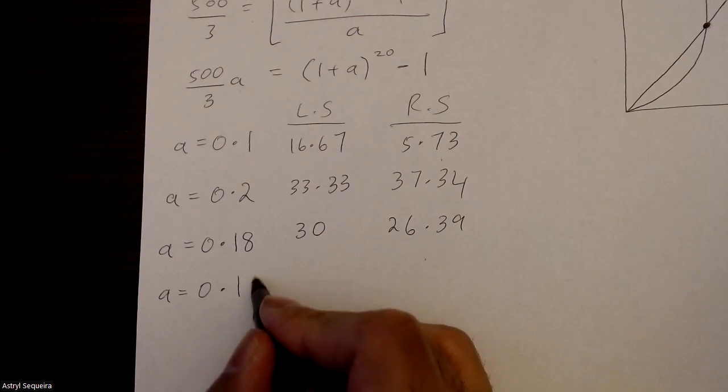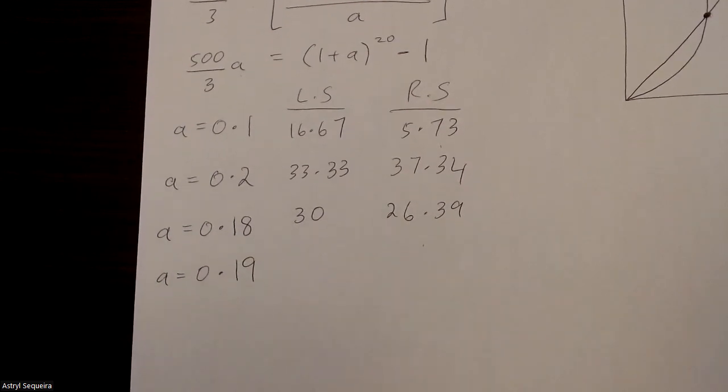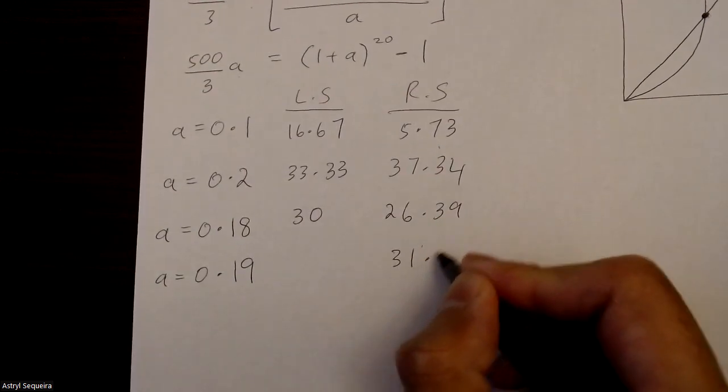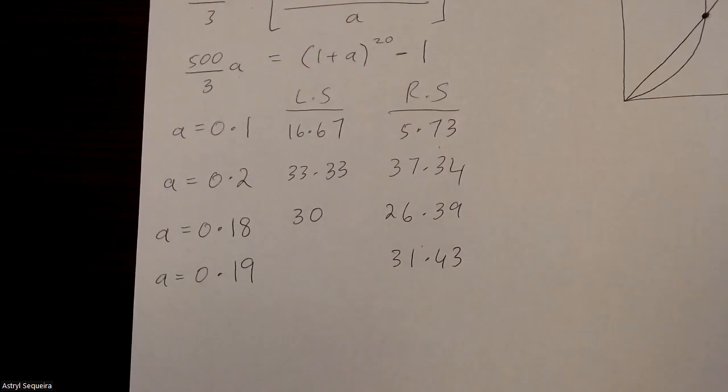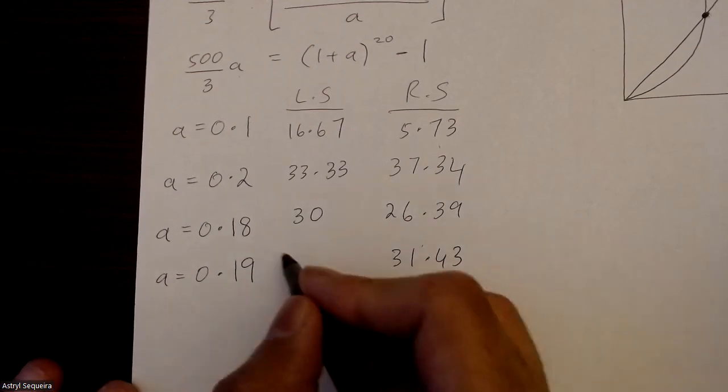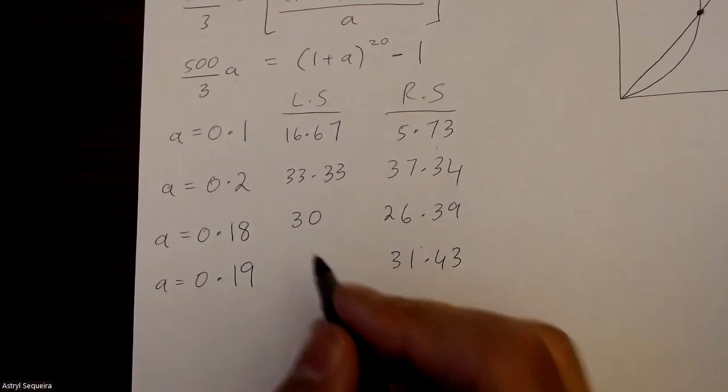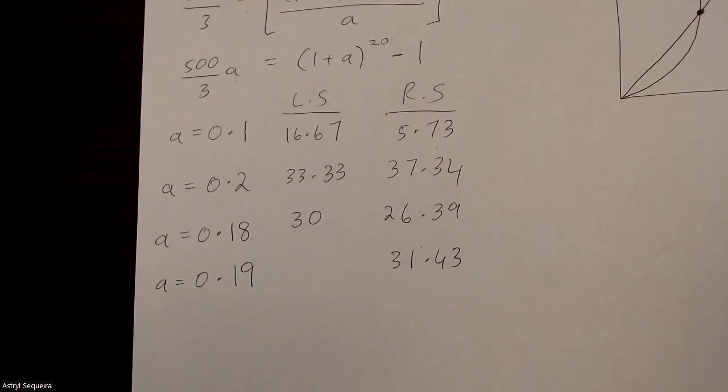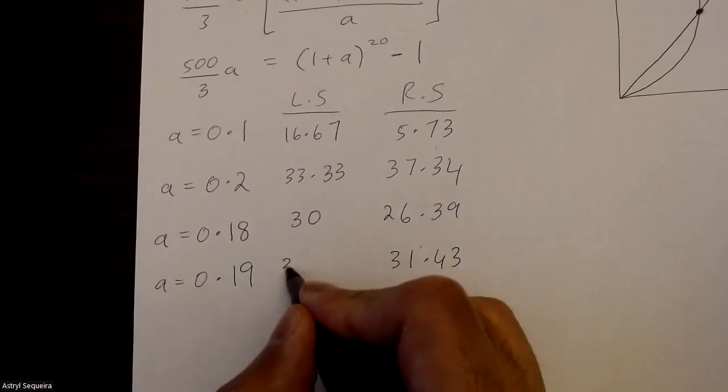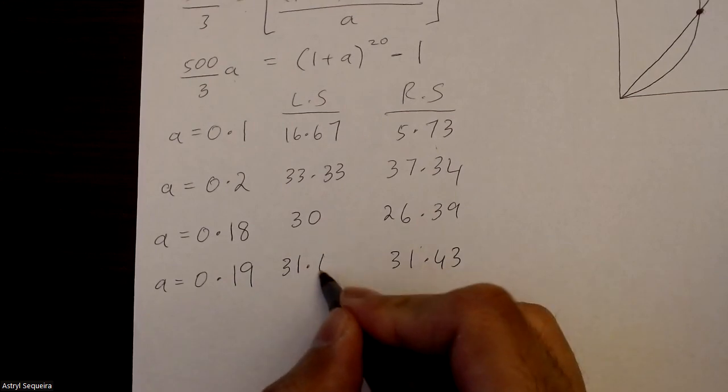Again, I'm going to try 0.19. This one is 31.43. And this one I'm assuming is going to be pretty close to this. Maybe not exactly the same. Oh, it's exactly the same. Oh, no. So I've written the wrong equation. 1.9. 31.67.